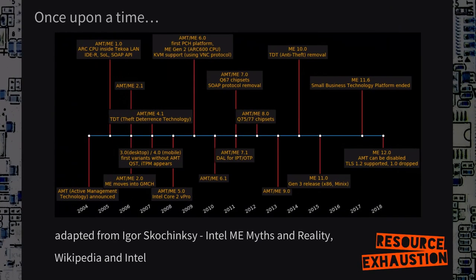There are lots of different variants and versions of the management engine with a very long timeline — from 2004 until now, 15 years since the Active Management Technology was announced, up to version 12 today. The problem with this timeline is, again per the disclaimer, I cannot really verify all of this information — it's gathered from different sources and may include some educated guessing. For each version of the ME, release notes are public. In ME12, they dropped TLS 1.0 and TLS 1.2 is now in, along with other features you can look up in Intel's documentation.